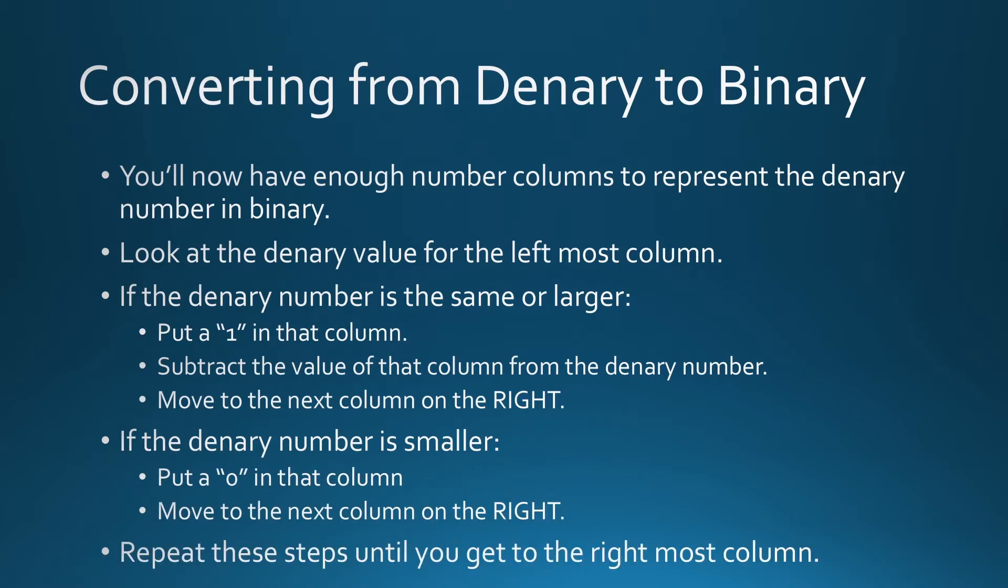You just keep repeating those steps. So if the number that you're looking at, if it's the same or larger than the column you're looking at, well put a 1 in the column and then take the value of that column away from the number. That'll reduce that number and then move to the next column on the right and compare it again. Is that number the same or larger? If it is, put a 1 in, take the value of that column away. If it's not, well you put a 0 and you move to the right.